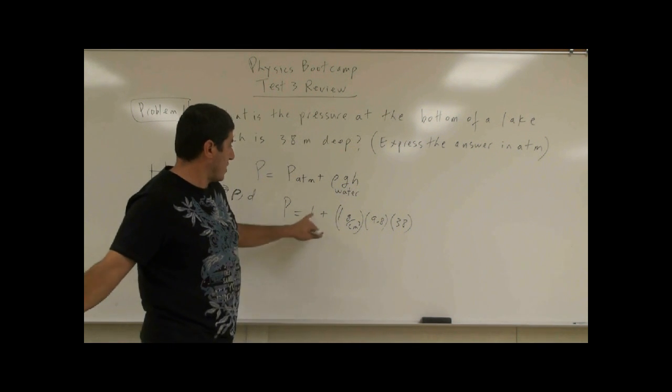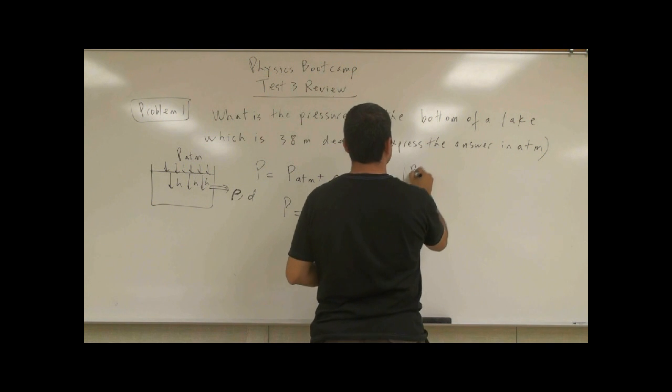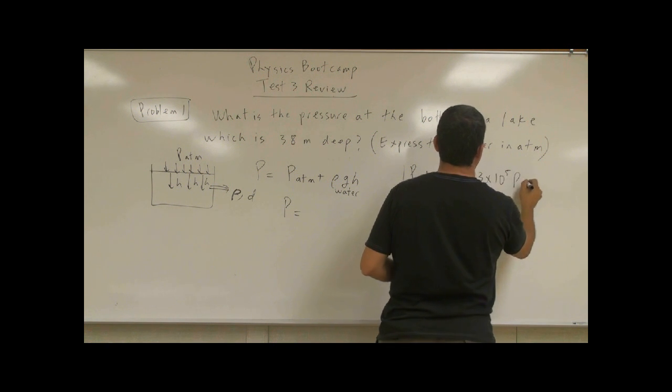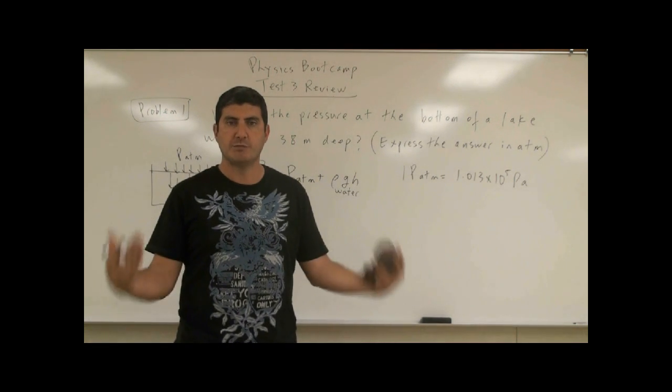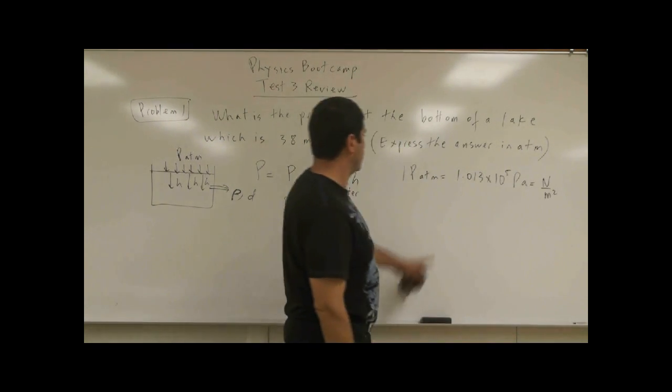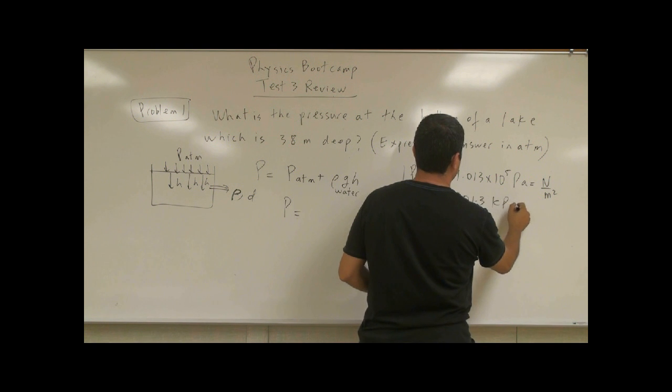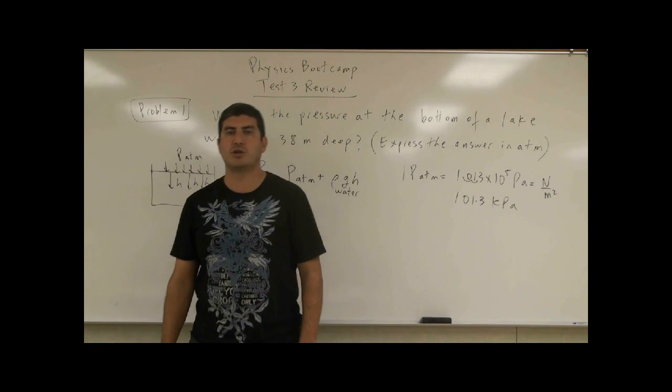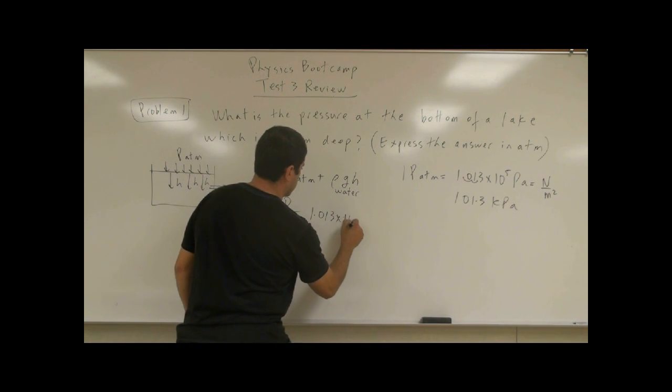So the way you have to do it is you have to use units of Pascals here. One atmospheric pressure is equal to 1.013 times 10 to the fifth Pascals. What is a Pascal? Pascal is a Newton per meter squared. It's the official metric unit of pressure. So that means one atmospheric pressure is 101.3 kilopascals. That's the other way we can write it. So that's going to be this one. You can't just put one. 1.013 times 10 to the fifth.